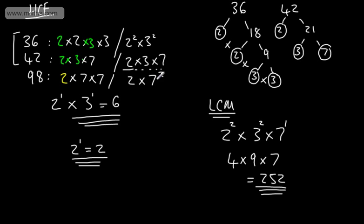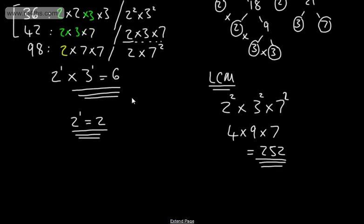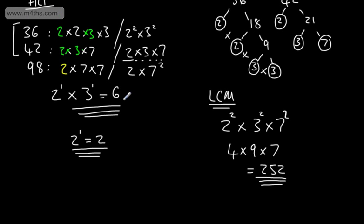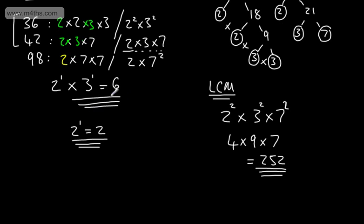If we wanted the lowest common multiple of all three numbers including 98, we'd have the 2, the 3, and the 7, but this time we'd swap to the squared term for 7 and multiply the answer by 7, giving us the lowest common multiple with each number raised to its highest power. Whereas for the highest common factor, we look at numbers that appear in both lists and take them to their lowest power.